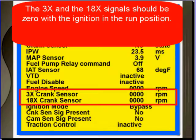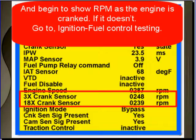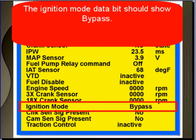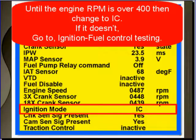On this example vehicle, we have a 3X and an 18X signal. So the crank signal should be zero with the ignition in the run position and show RPM as the engine is cranked. If it doesn't, go to fuel and ignition control testing. It's normal for the engine speed, 3X, 18X, and the RPM not to show the identical RPM. The ignition mode data bit should show bypass until the engine RPM is over 400 during cranking, and then it should change to IC. If it doesn't, go to ignition fuel control testing.